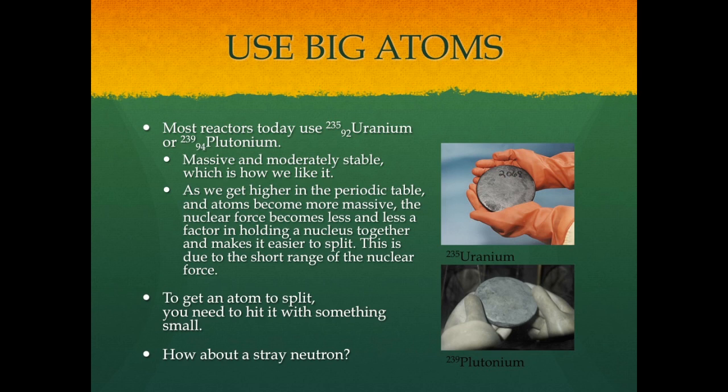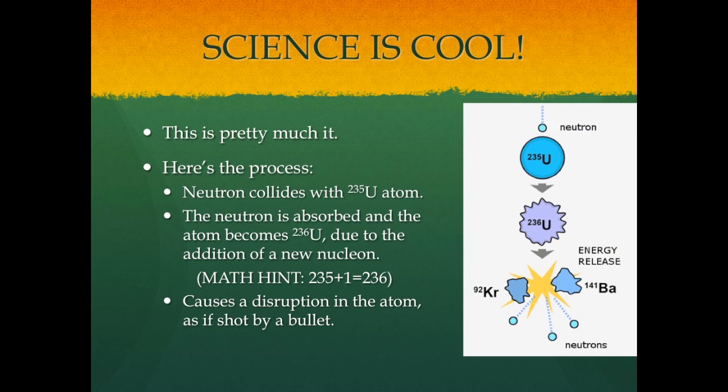To get an atom to split, you need to hit it with something small — in this case, a stray neutron. This is the process of how a uranium atom is split and how nuclear power works. As you can see, a neutron hits a uranium-235 atom. The neutron is absorbed, and the atom becomes uranium-236. With the addition of a new neutron, it now has a new nucleon: 235 plus one neutron makes it 236. Now it becomes uranium-236. But this uranium-236 just got hit with something, and it starts to cause a disruption in the atom — almost like it's been shot by a bullet — and it starts to wiggle.